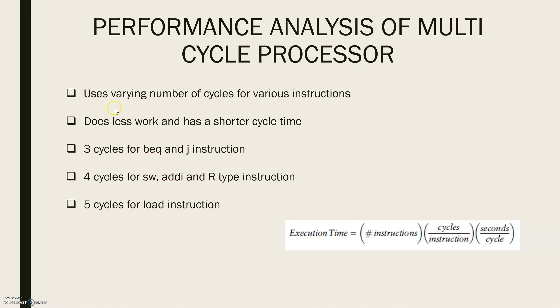The multi-cycle processor uses varying number of cycles for various instructions. However, the multi-cycle processor does less work in a single cycle and thus has a shorter cycle time. The multi-cycle processor requires 3 cycles for BEQ and jump instruction.